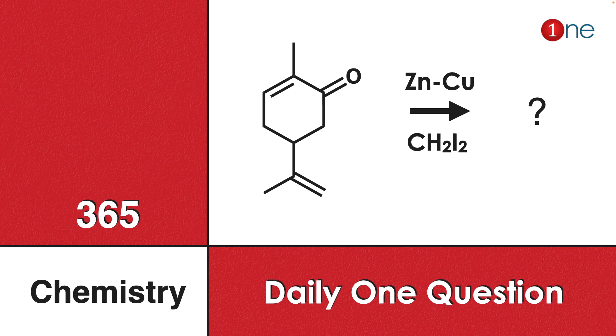And you have an isolated double bond. You are using zinc-copper couple and diiodomethane. They ask you to find the product.